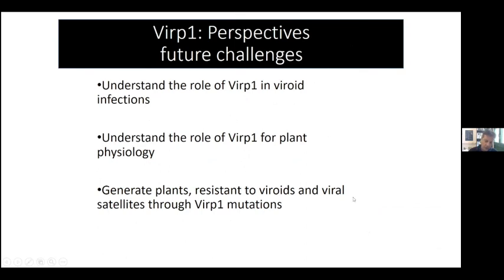We're trying to understand the role of VIRP1 in viroid infections but also for plant physiology, and we would like to have these two things separated. If we could generate plants that retain all the VIRP1 functions required for the plant, but suppress the functions required for the viroid, then we could have a nice breeding target to breed plants resistant to viroids and satellite RNAs.